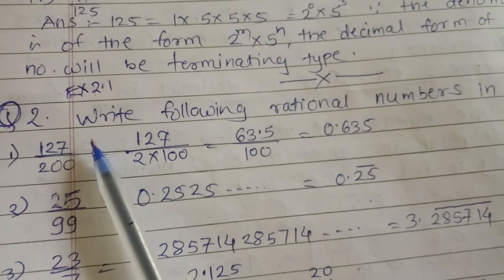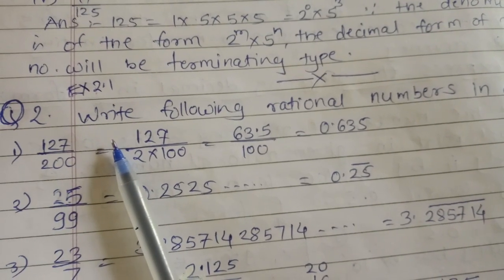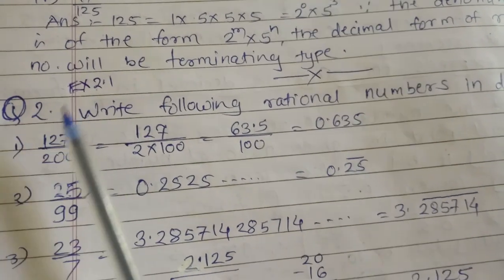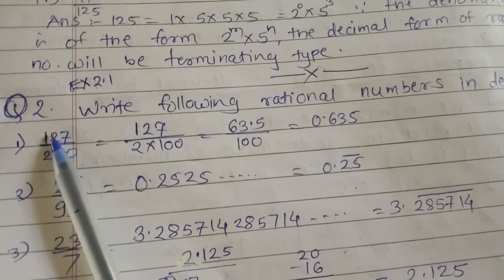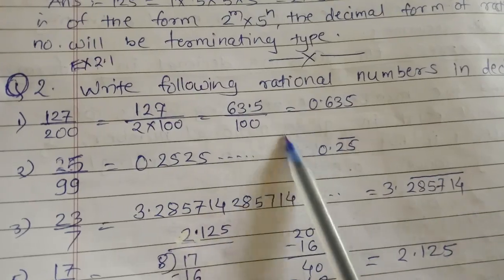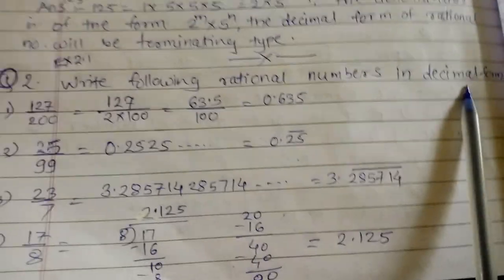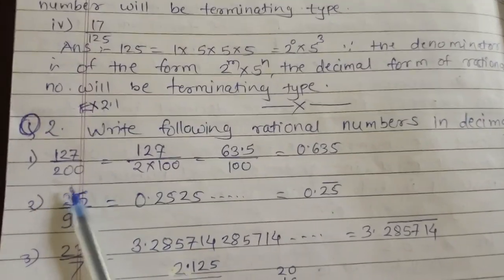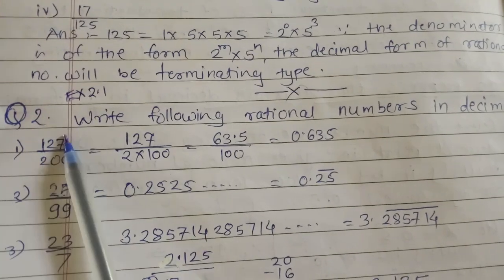Hello students, I'm going to continue the chapter Real Numbers of standard 9, Exercise 2.1, question number 2. Write the following rational numbers in decimal form.